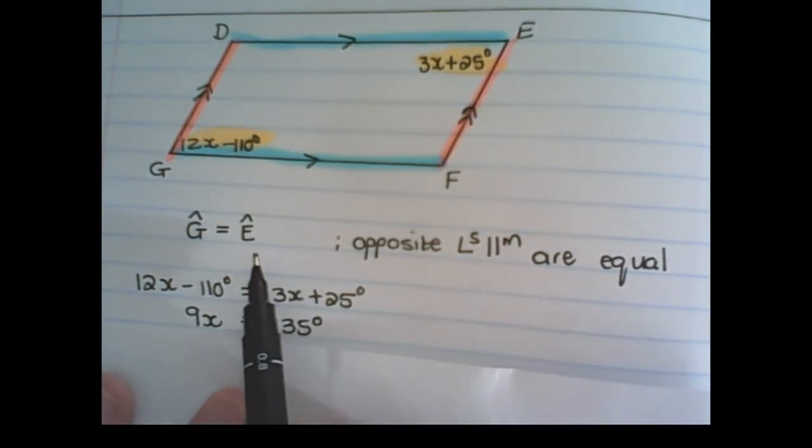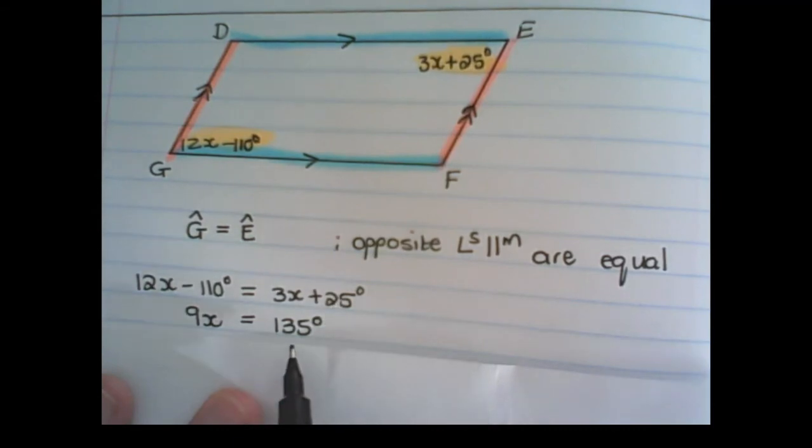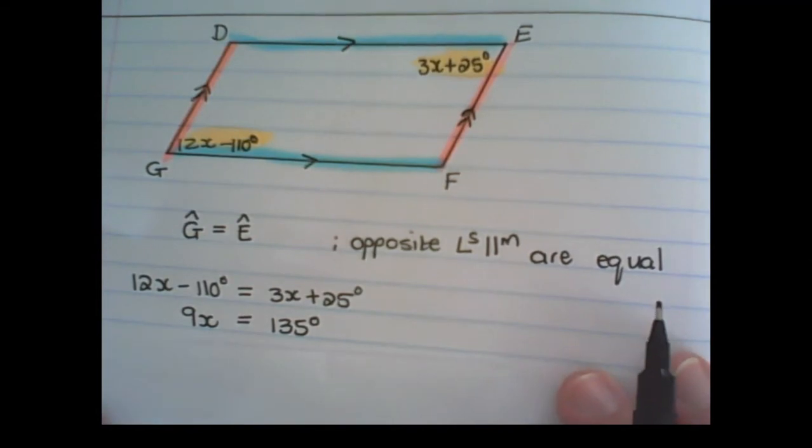I transpose the x's to the left and the 110 degrees to the right in order to find 9x equal to 135 degrees. And then I divide both sides by 9 and I find that x is 15 degrees.